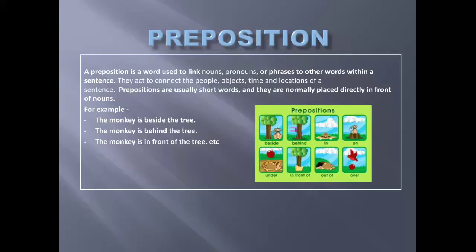A preposition is a word used to link nouns, pronouns or phrases to other words within a sentence. They act to connect the people, objects, time and location of a sentence. Prepositions are usually short words and they are normally placed directly in front of nouns.